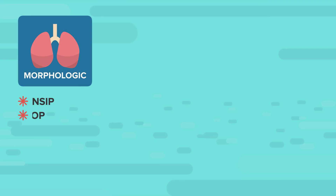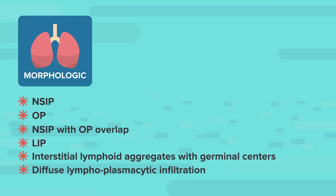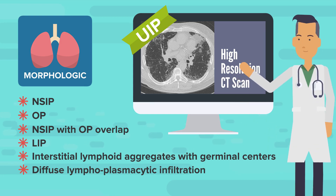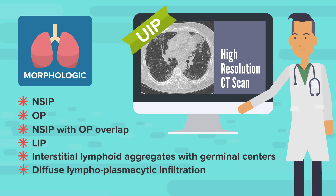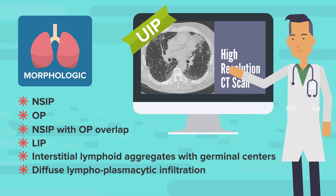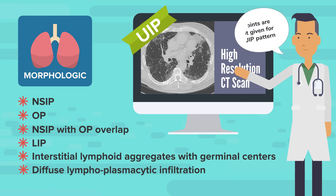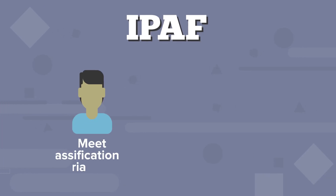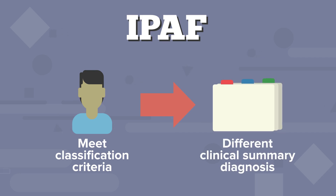In the morphologic domain, high-resolution CT scan features and histopathology patterns are included. I'd like to make a note about UIP, or usual interstitial pneumonia pattern, on high-resolution CT scan. Having a UIP pattern on HRCT does not preclude classification as IPAF. However, points are not given for a UIP pattern. Thus, patients can meet classification criteria for IPAF but have a different clinical summary diagnosis.